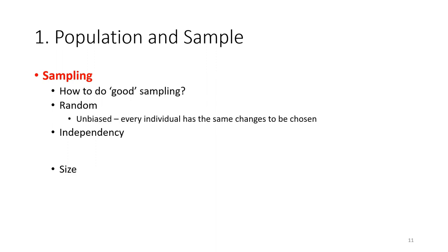So random, so that means that every individual or every observation has the same chances to be chosen. Independency, that means that one individual or one observation has no effect on the other individual. So every individual or observation is independent from each other.